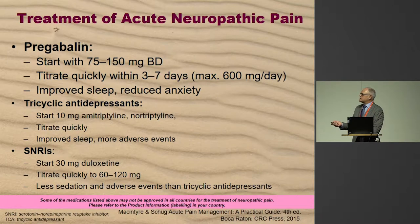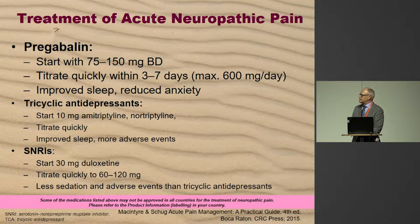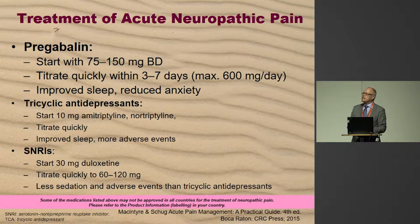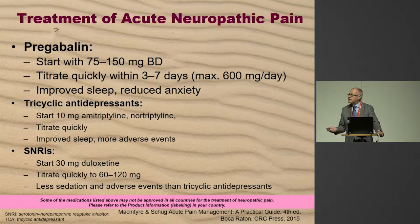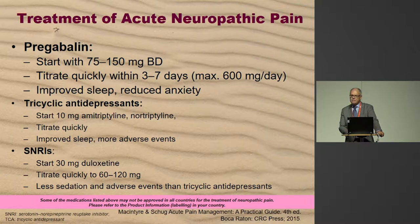With rapid pregabalin titration you also get improved sleep and reduced anxiety. If the patient develops cognitive impairment, you can wind the dose back as they start rehabilitation. Tricyclics start much lower, titrate quickly but don't give as quick an effect. SNRIs also titrate quickly but give less sedation and adverse events. However, pregabalin beats all of these in time to effect.